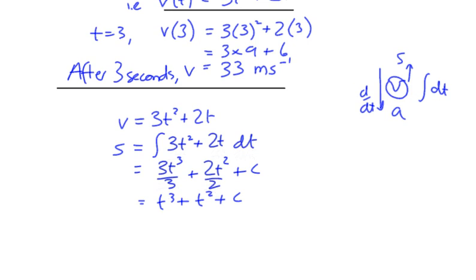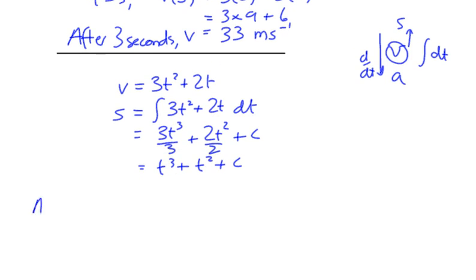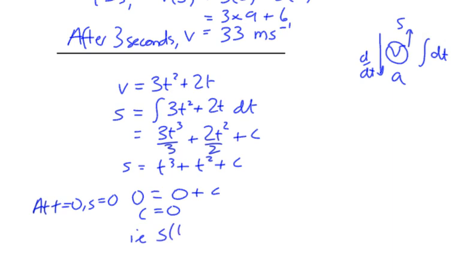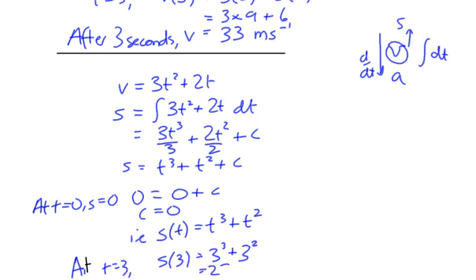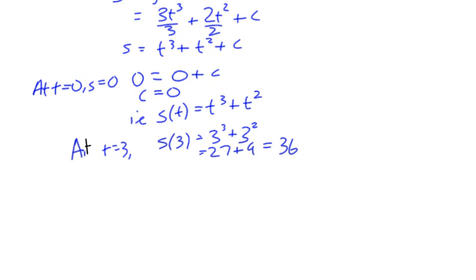Again it's a general solution, but we have the fact from the start that when t equals 0, the displacement is also zero — we're measuring displacement from the start. Substituting zero in, C is again zero. So our particular function of displacement is just t cubed plus t squared. Therefore at t equals 3: 27 plus 9 equals 36, so the displacement is 36 metres.